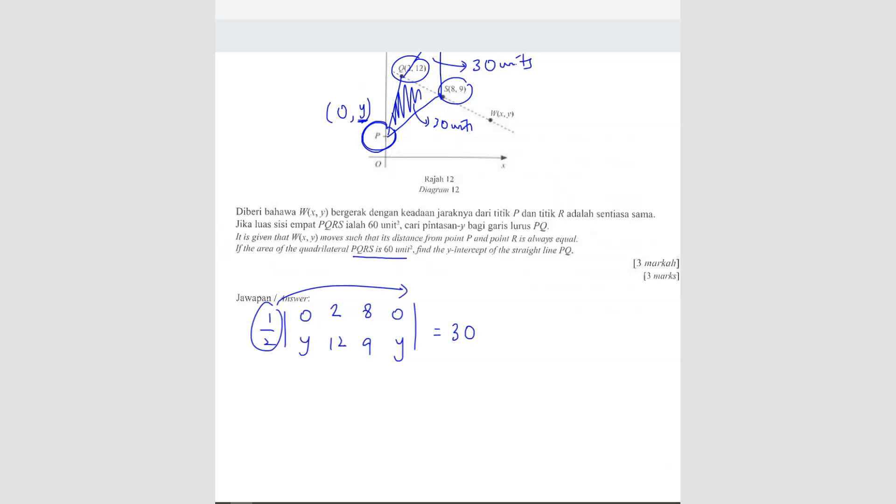We can use the formula 1 over 2. So we got 0, Y, and then 2, 12, 8, 9, and 0, Y. Don't forget to repeat it. Equals to 30 units. So bring this on the opposite side, you get 60 here. You get 0 plus 18 plus 8Y minus 2Y minus 96 minus 0 equals to 60. And because you're going to shift the modulus as well, so you have plus minus. From here, 8 minus 2, we get 6Y, and then you get negative 78 plus minus 60. So now we'll have two answers.